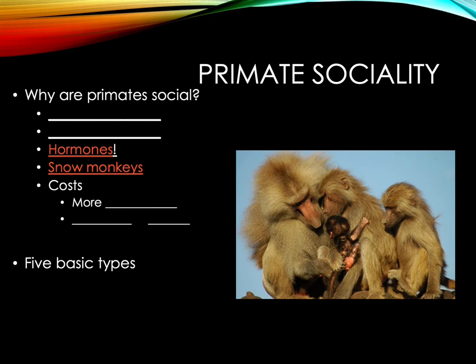Why are primates so social? They live in most cases in relatively large groups, and this includes humans. There are two possible explanations and important negative consequences as well. Living in relatively large groups is a successful strategy to decrease predation — predator avoidance is the first reason. It also increases the likelihood of successfully mobbing and deterring a predator attack, and if an attack does occur, it decreases the chance that you are the one that is eaten.